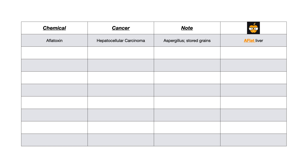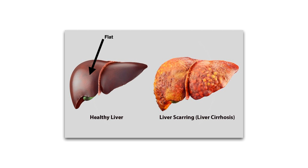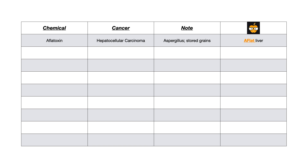Aflatoxin causes hepatocellular carcinoma. You should know it is derived from Aspergillus, and the classic buzzword association to look for on test day is that it comes from stored grains. The way I remember this is by saying 'a flat liver' — aflatoxin starts with 'a flat,' and a healthy liver has a flat, smooth contour. So memorize 'a flat liver' for aflatoxin, which causes hepatocellular carcinoma when the liver becomes scarred and abnormal.